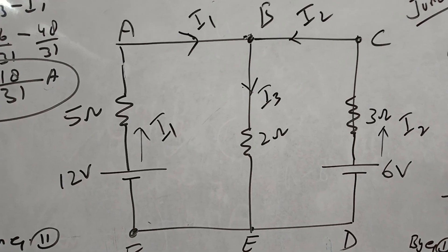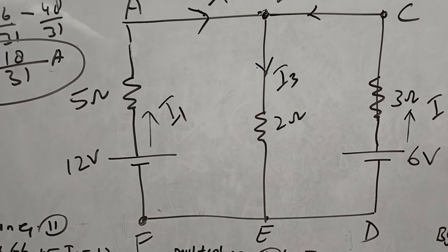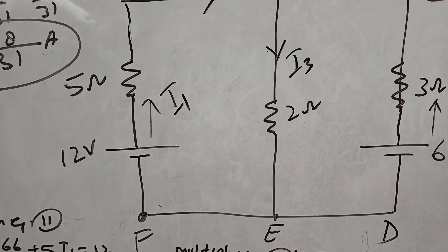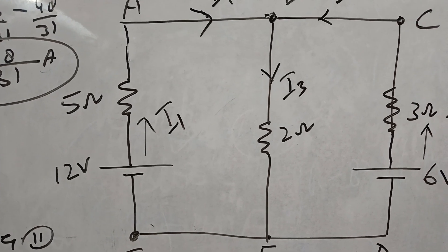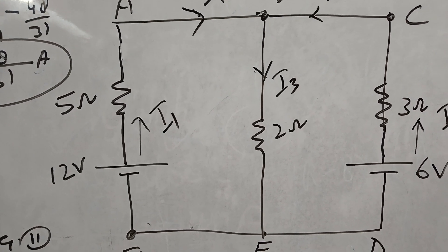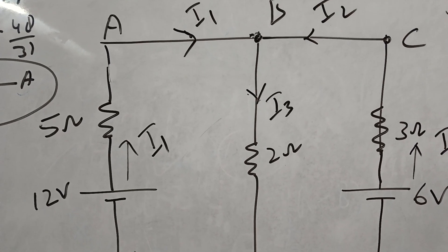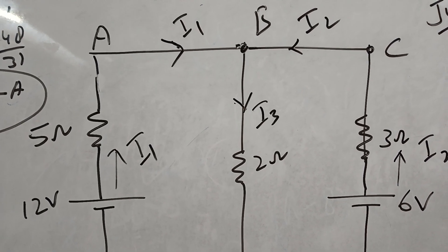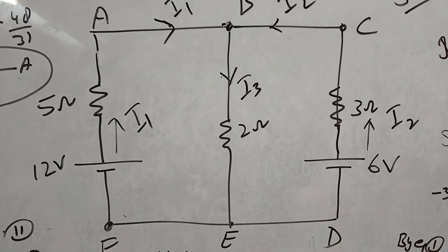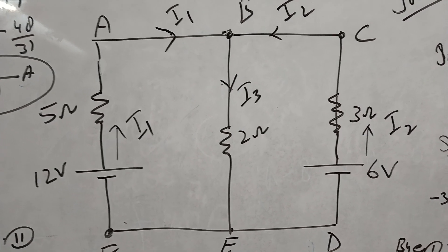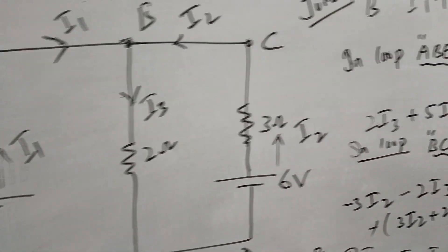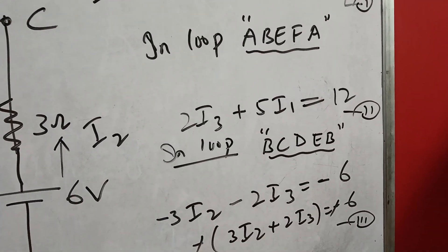So we multiply 2 with I3, that would be positive. Then for 12V, you are looking at the negative terminal, which means it should be plus 12V. And 5 into I1, we will also consider plus because we are going in that direction. So in the loop ABEFA, we can write 2I3 plus 5I1 equals 12.